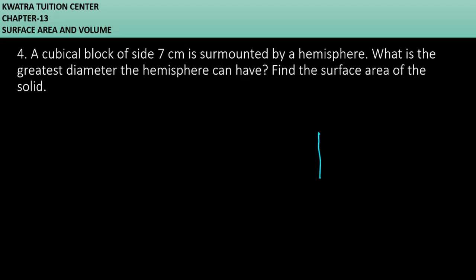First of all, what do we have here? You have a cubical block and on it we have a hemisphere. Now, how much is the side of the cubical block? 7 cm.